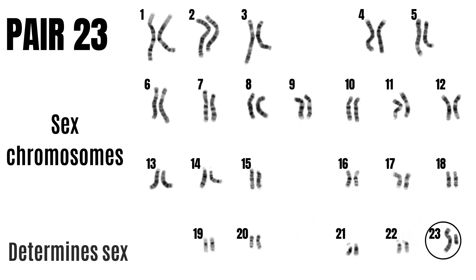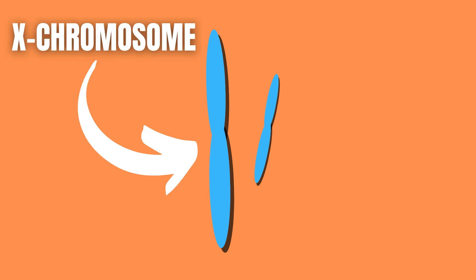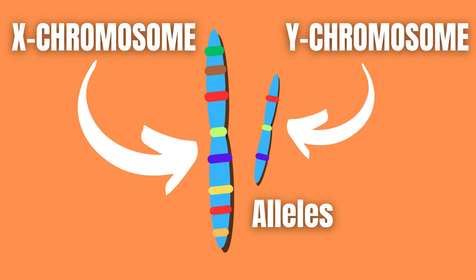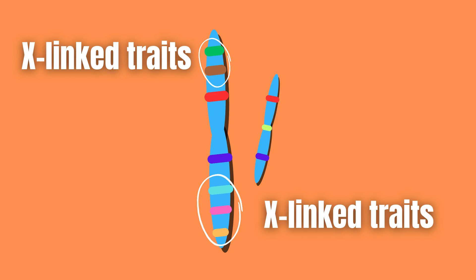Sex-linked traits refer to traits that are located on the sex chromosomes. The most important thing to know about this chromosome pair is that the X chromosome is much larger than the Y chromosome, meaning that most alleles located on the sex chromosomes only exist on the X chromosome. We call these X-linked traits, and these are generally what we refer to when we talk about sex-linked traits.